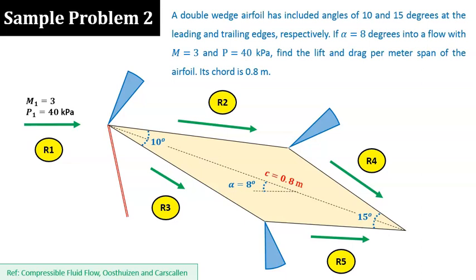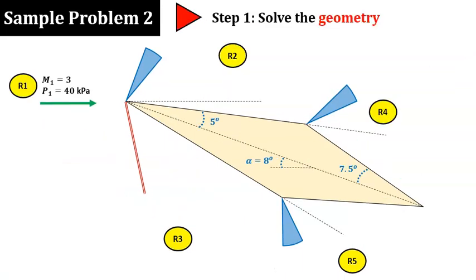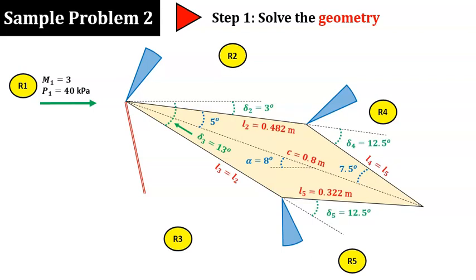But before we start calculating the flows in detail, we need to figure out the angles and the lengths of the sides of the surfaces that we need in our calculation later. This is a geometrical problem, so it should be doable, even though sometimes the geometry can be a bit tricky. So, I'll leave you to figure this out yourselves. I'll show you the answers for you to compare with your own answers. Each delta angle here is the flow deflection angle at each corner. Each side length is needed later to calculate the force on each surface.